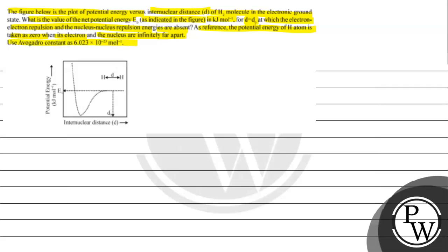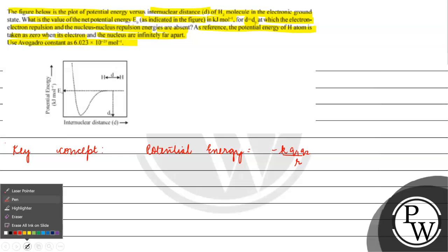Avogadro's constant value is 6.023 into 10 to the power 23 mole inverse. The key concept for this question is potential energy. Potential energy is basically equals to minus k q1 q2 by r.